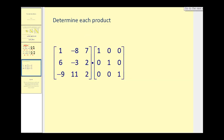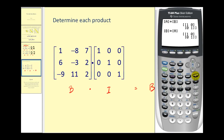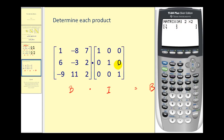Let's try one more example. This is the identity matrix; if we call the other matrix B, we'd expect the result to be matrix B. Let's check this on the calculator. Press second, then matrix, go over to edit, and press enter. We'll call matrix A the identity matrix — it's a three by three. We enter: one, zero, zero, zero, one, zero, zero, zero, one. There's the identity matrix.